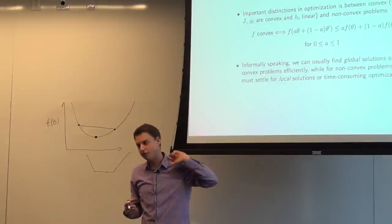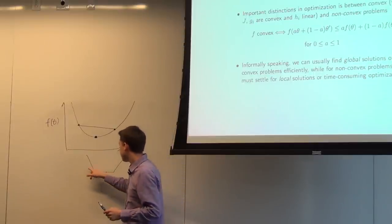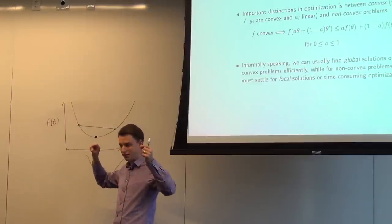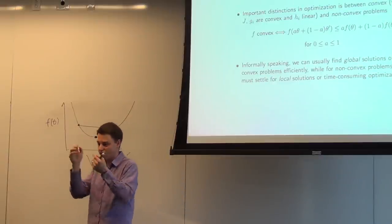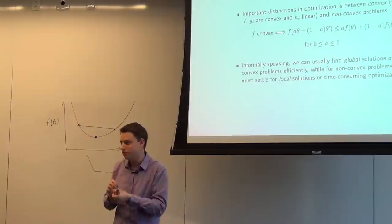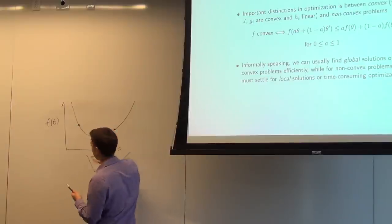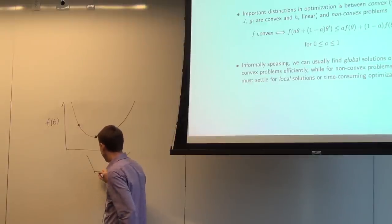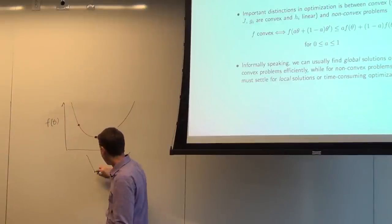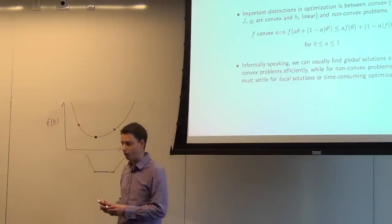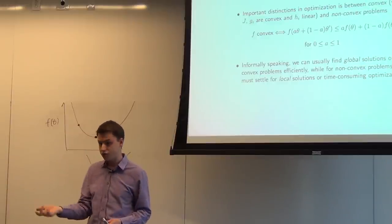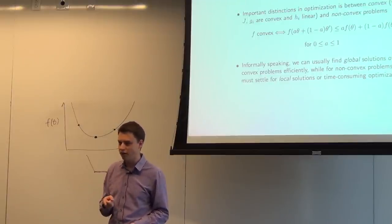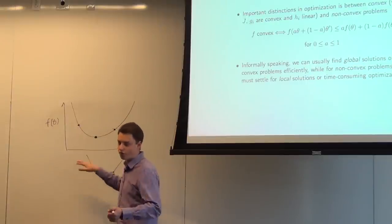That's actually easy to show from the definition: if you have two local optima and the convexity property holds, then the point in between them should also be an optimum, creating a contradiction if they weren't global. There are notes posted online on convex optimization that go through that proof in more detail. For multiple-variable functions, the equivalent condition is that the Hessian matrix is positive definite — meaning all its eigenvalues are greater than zero — which is analogous to the second derivative being positive.